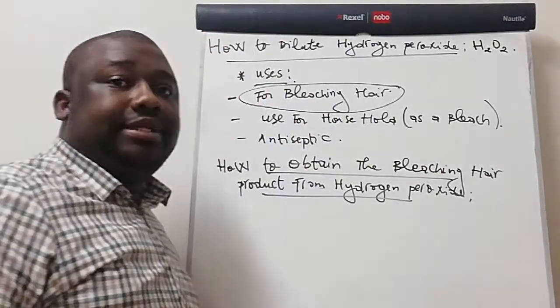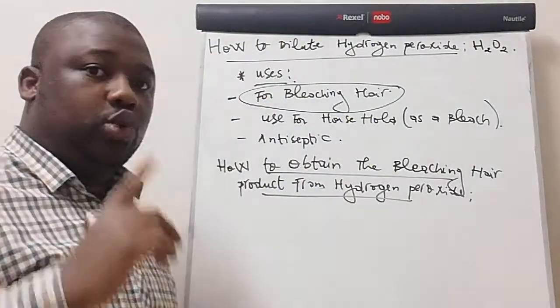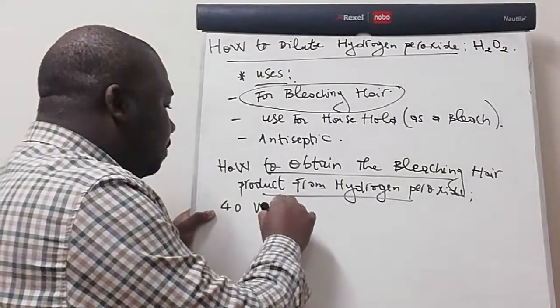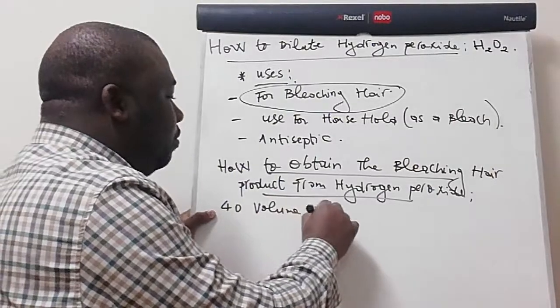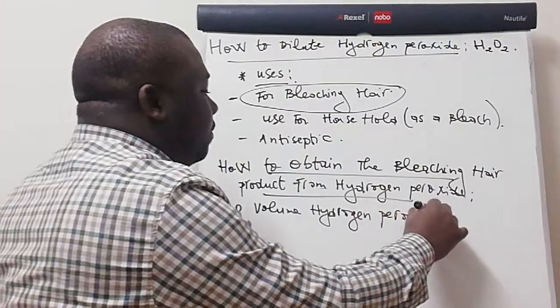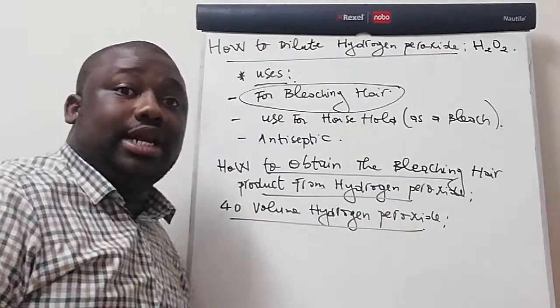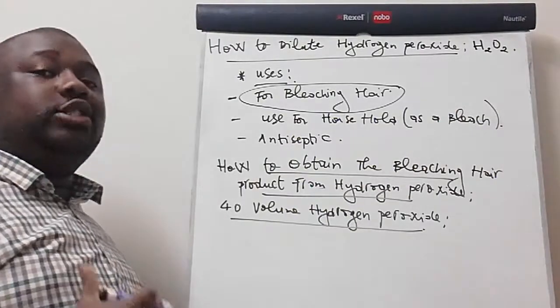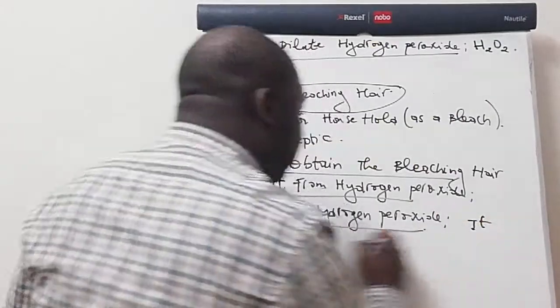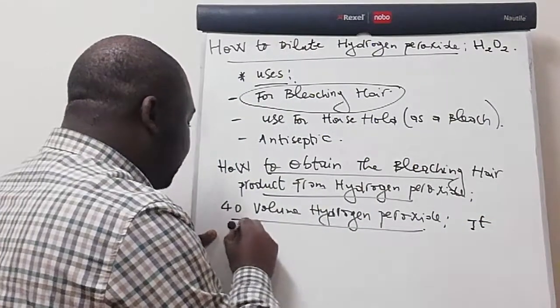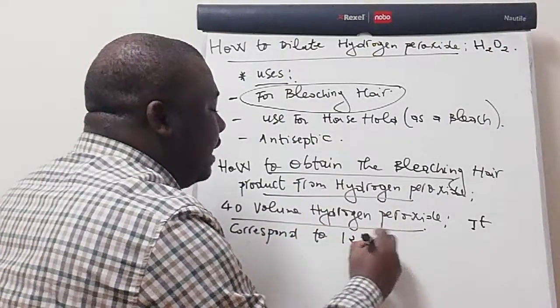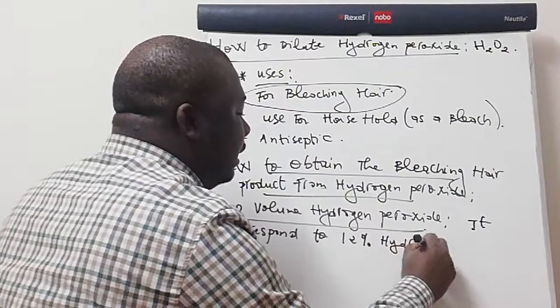How do you obtain this? When you actually go to the shop, you will see this product. It's written 40 volume, 40 volume hydrogen peroxide. This is a commercial name. But what does it mean? This 40 volume hydrogen peroxide corresponds to 12% hydrogen peroxide.